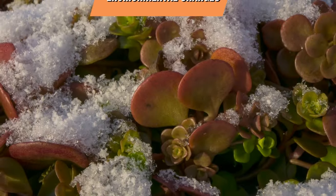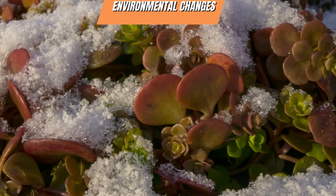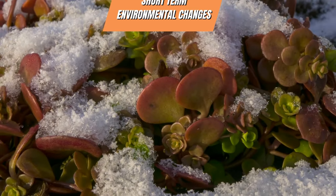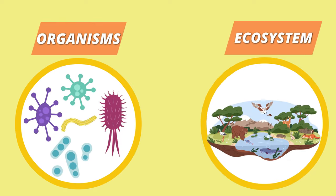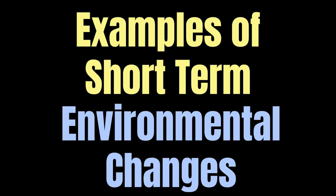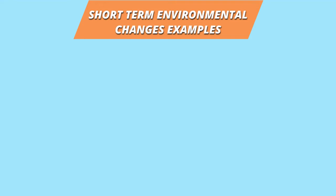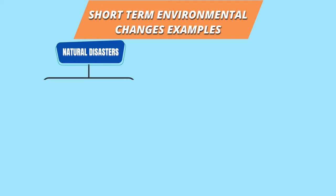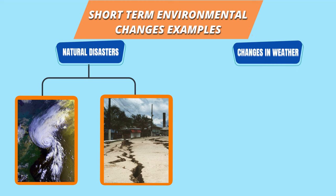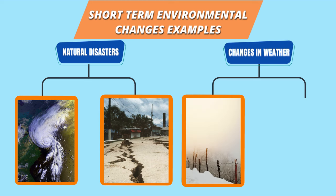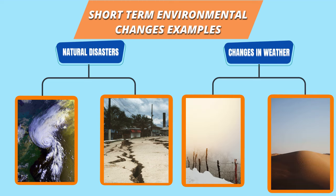Short-term environmental changes happen quickly and have an immediate effect on organisms in an ecosystem. Examples of short-term changes include natural disasters, such as hurricanes or earthquakes, and sudden changes in weather, such as a cold snap or heat wave.